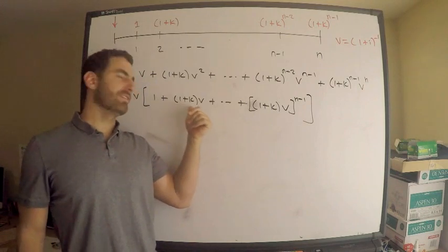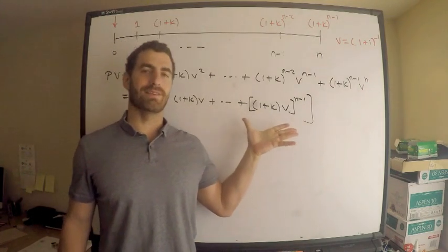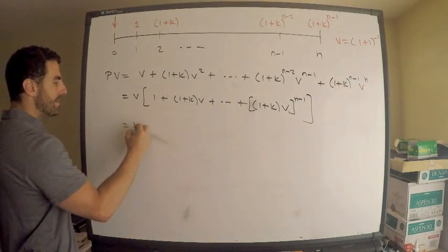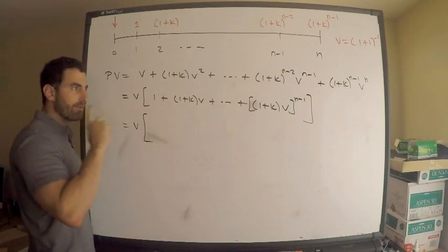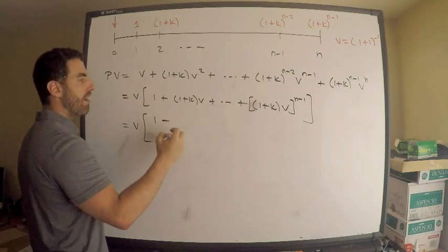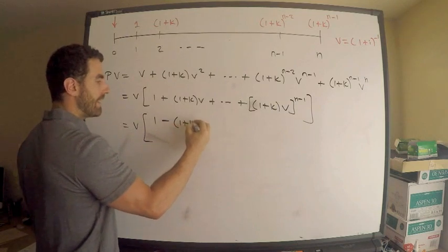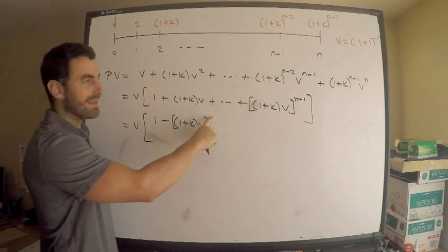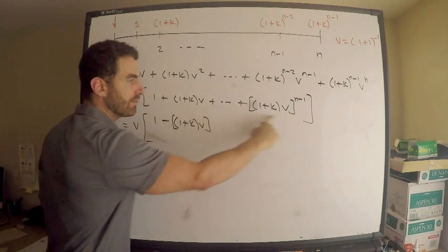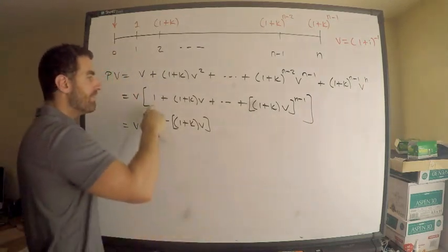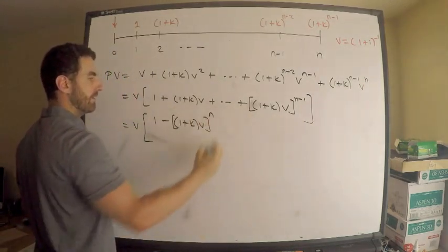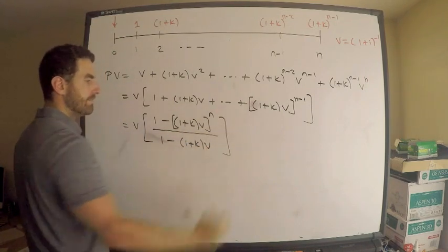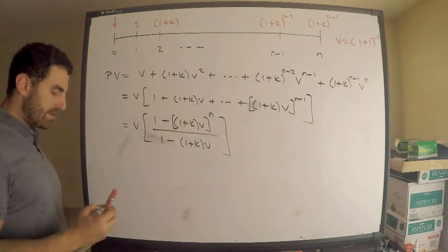This enables me to write this as a nice finite geometric sum. For a finite geometric sum I need: 1 minus the common ratio — which is (1+k)·v — raised to the power n (there are n terms), divided by 1 minus (1+k)v. So the expression becomes v times [1 − ((1+k)v)^n] / [1 − (1+k)v]. We're pretty much there.